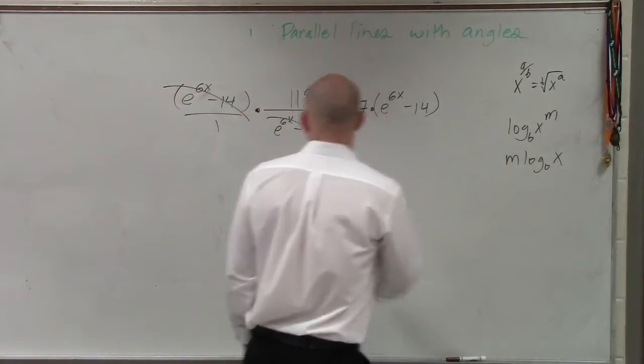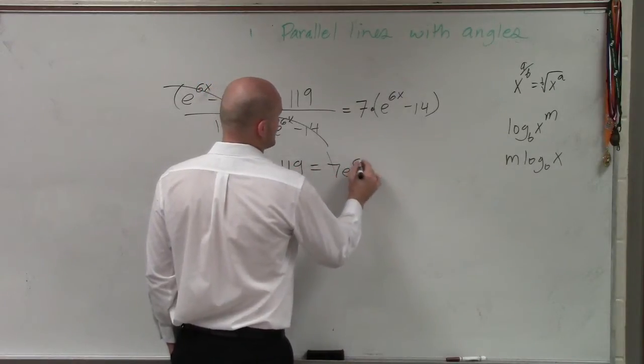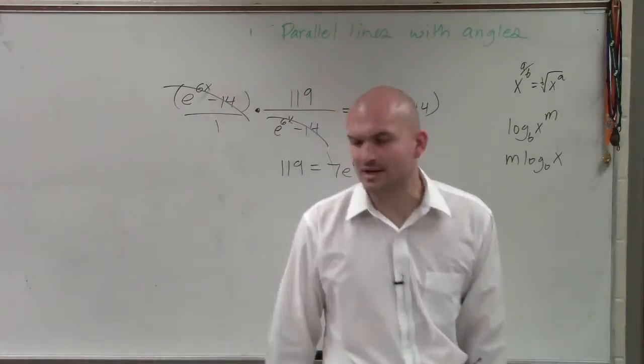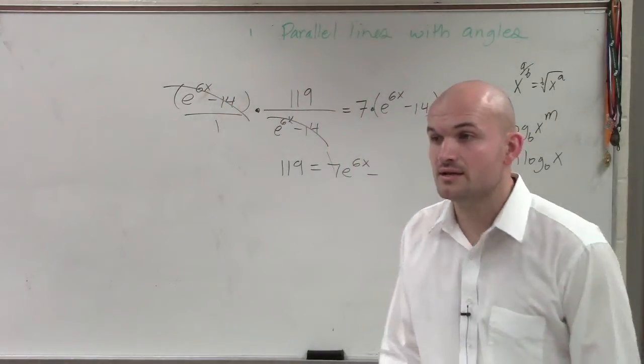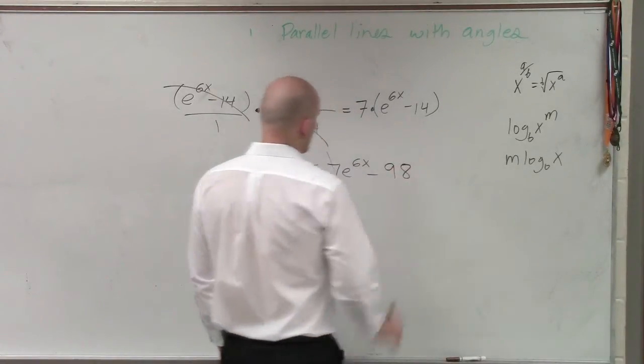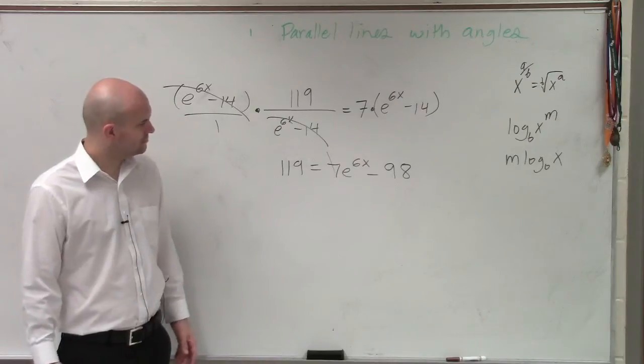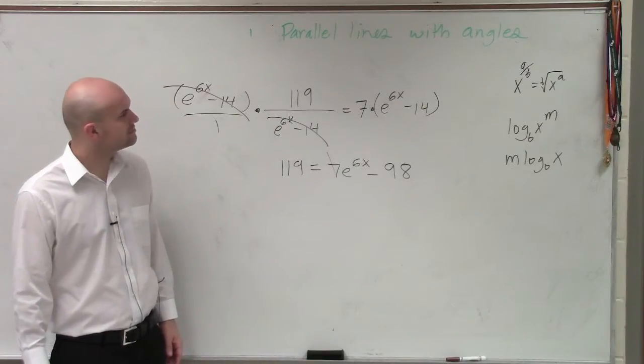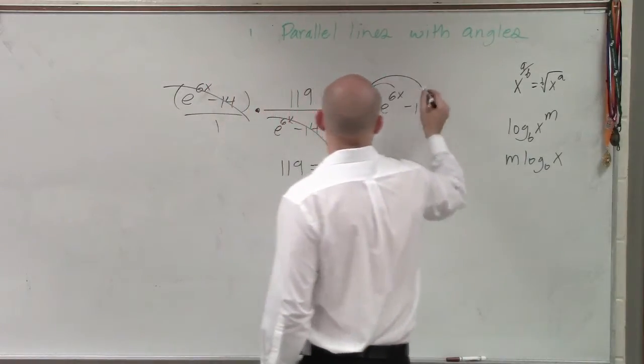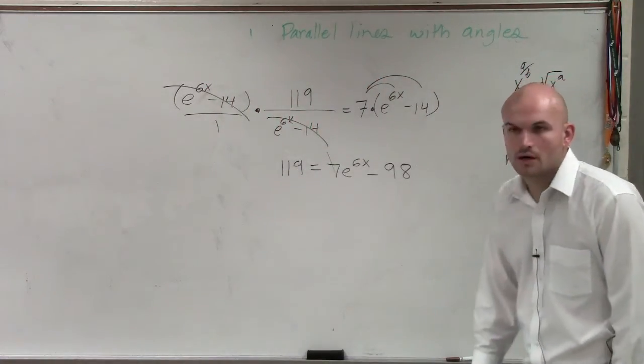All right? So now I have 119 equals 7e to the 6x minus 7 times 14. Anybody just want to help me out? What is it? 98. Okay. Why did you cancel out 7? I didn't cancel out 7. I didn't cancel out 7.